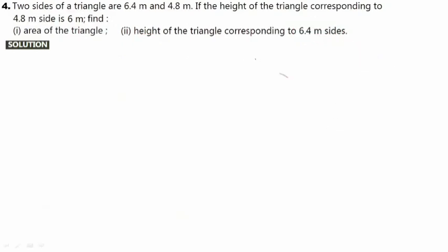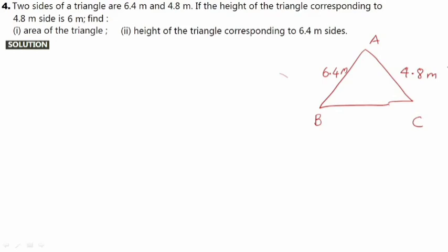Let us have a similar last question for the day. Two sides of a triangle are 6.4 and 4.8 meter. We have triangle ABC again. The two sides are 6.4 meter and 4.8 meter. If AC is 4.8, then the height corresponding to AC is BD, drawn from the opposite vertex B. This height BD is given to be 6 meter. You need to find the area of the triangle.